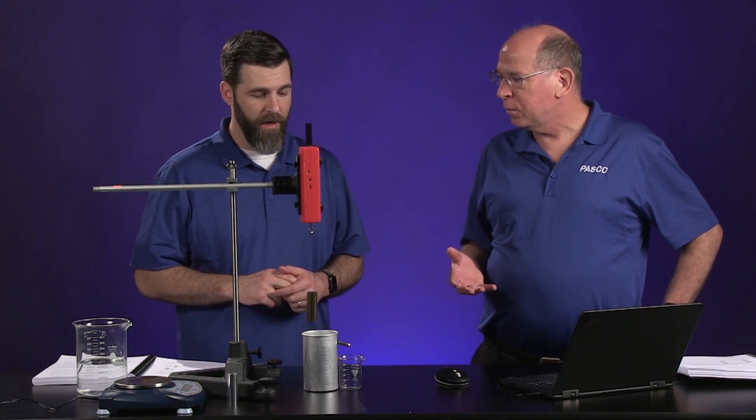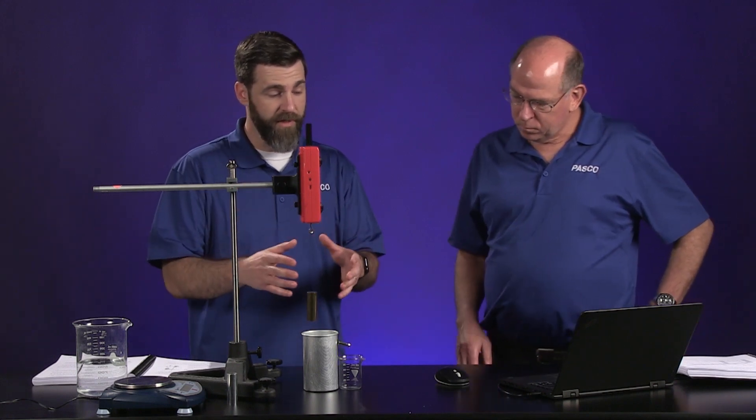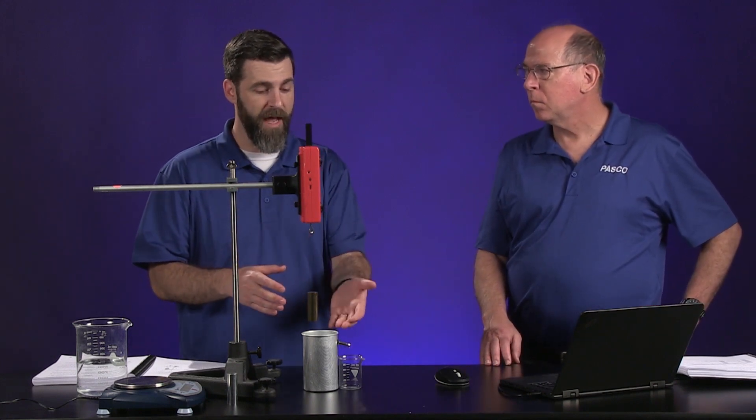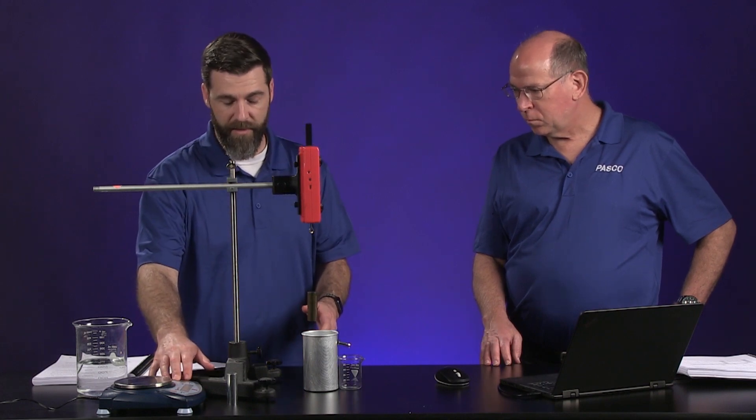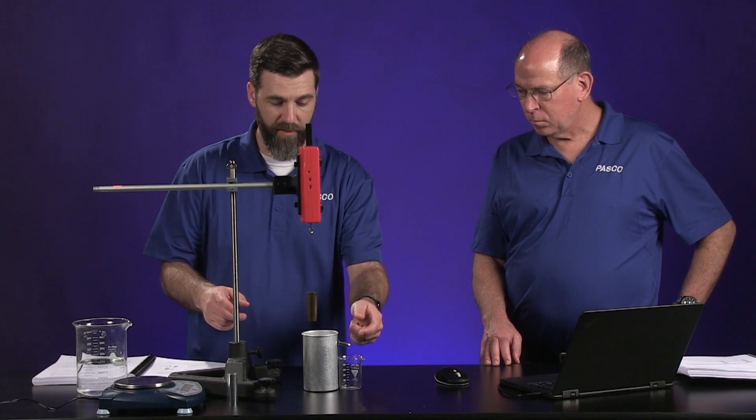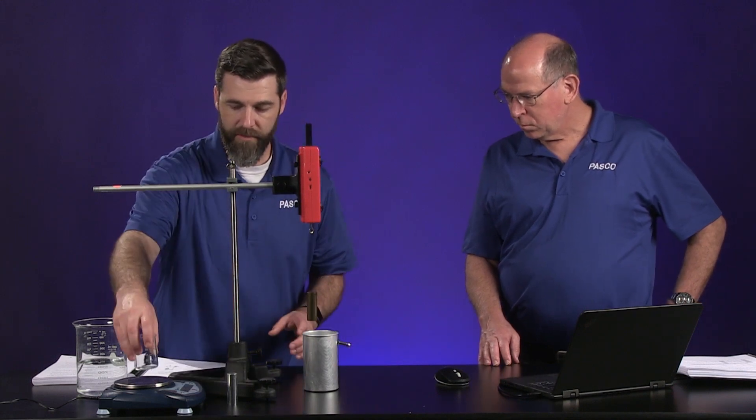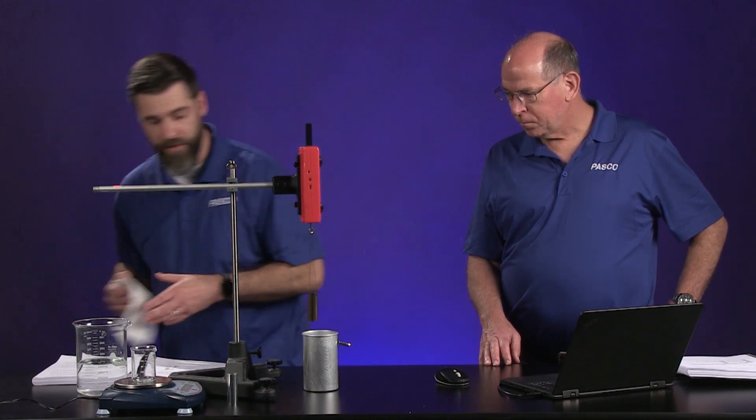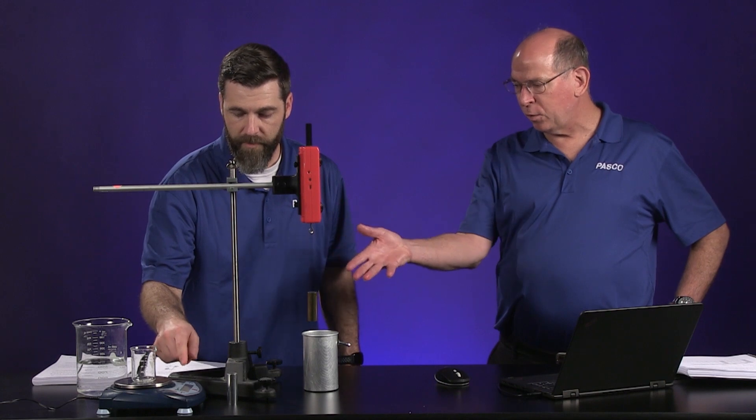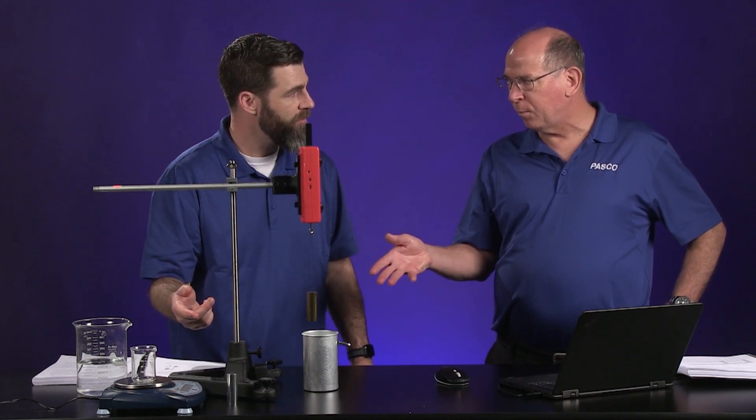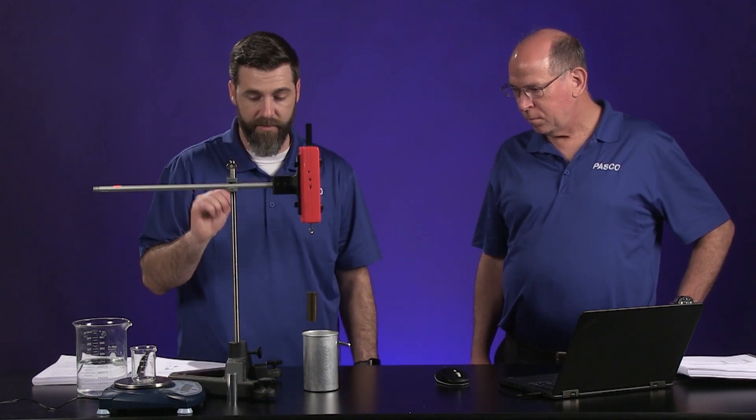What we're going to do in this experiment is measure a few things, and one of them is the mass of the displaced water. I've got a balance here that we're going to first put the beaker on, and I'm going to do that right now. You can either record the mass of the beaker, which is about 50 grams, or what we're going to do is put the beaker on here and then tare it or zero it.